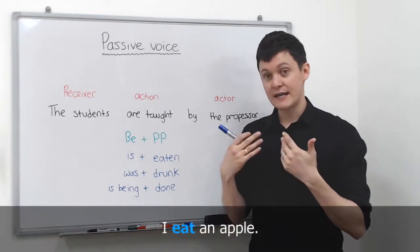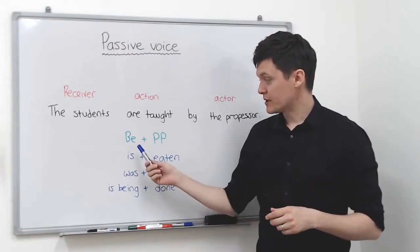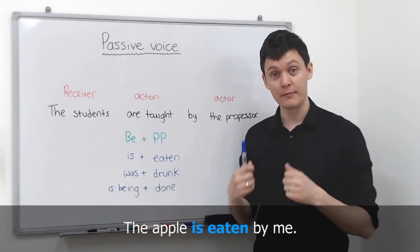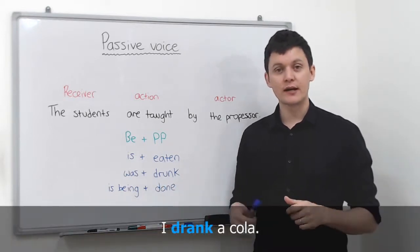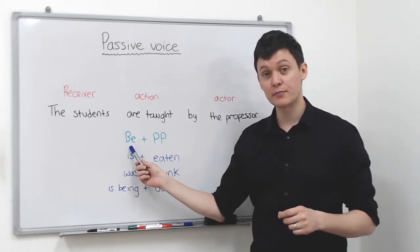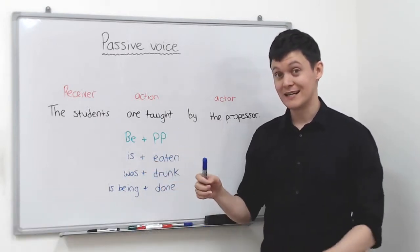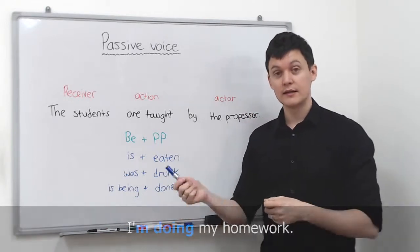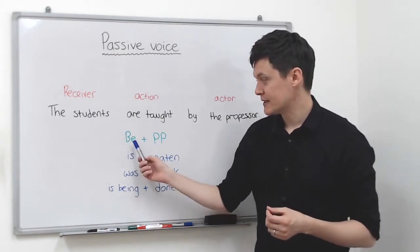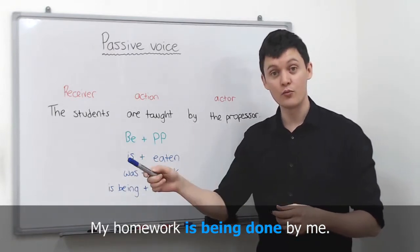Imagine: I eat an apple. Eat is the present simple, so we must use the present simple of B. So: the apple is eaten by me. Next: I drank a cola. Drank is the past simple, so we must use the past simple of B. So: the cola was drunk by me. Finally: I'm doing my homework. Doing is the present continuous — verb plus ing. So the present continuous of B is being, making: my homework is being done by me.